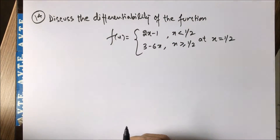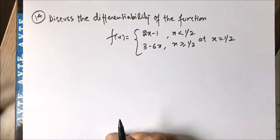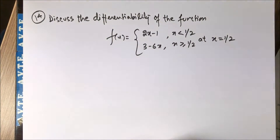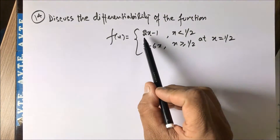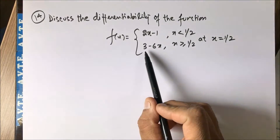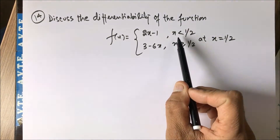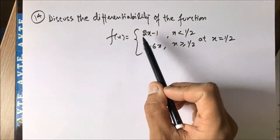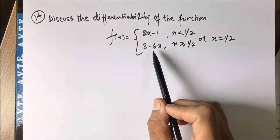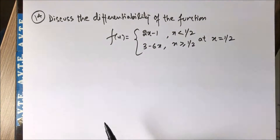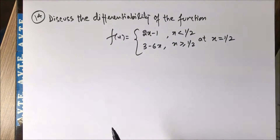Before we solve this question, I'll give you a shortcut that is a little funny but will work and boost your confidence. Before making it subjective and applying the theorem of differentiability, you can simply differentiate each branch. The derivative of the first branch is 2, and the derivative of the second branch is minus 6. For all values of x less than 1/2 the derivative is 2, and for x greater than or equal to 1/2 it is minus 6.